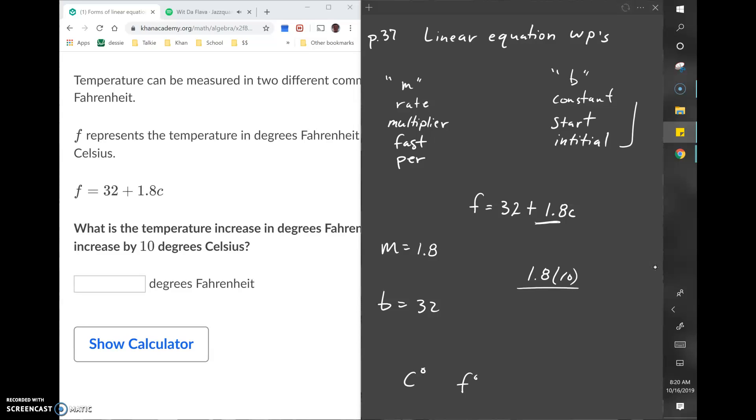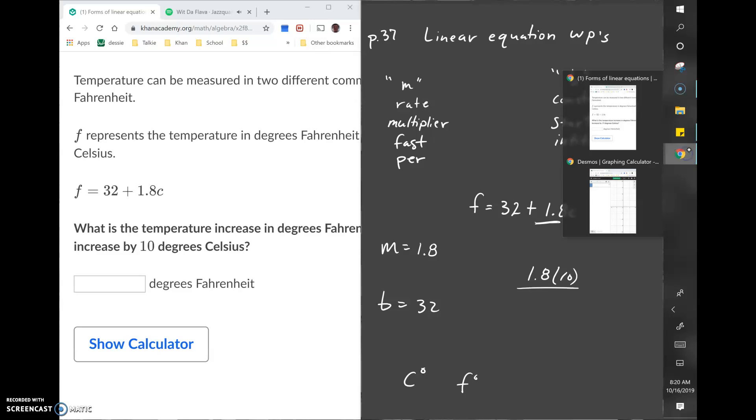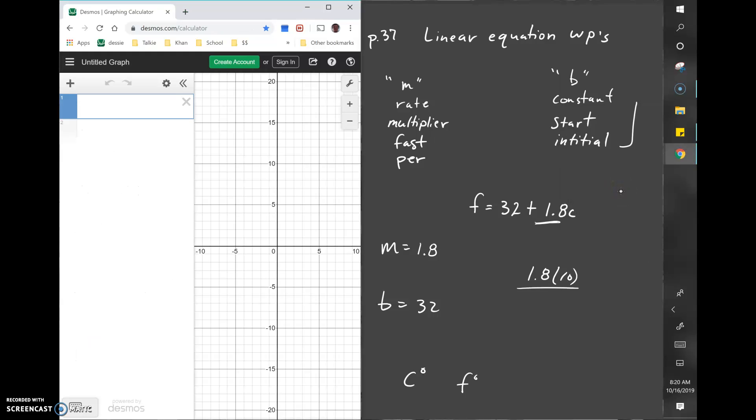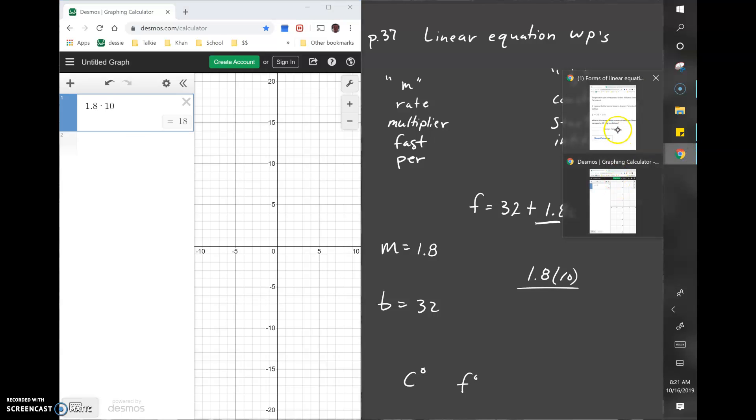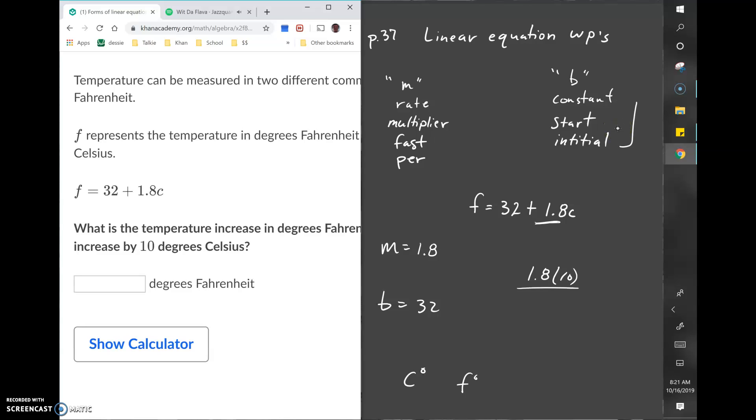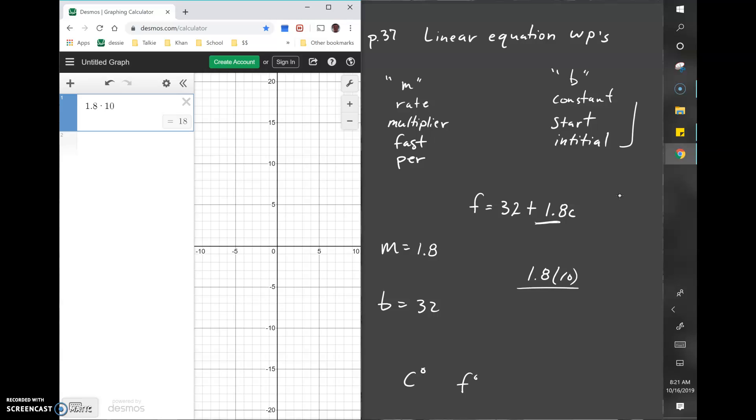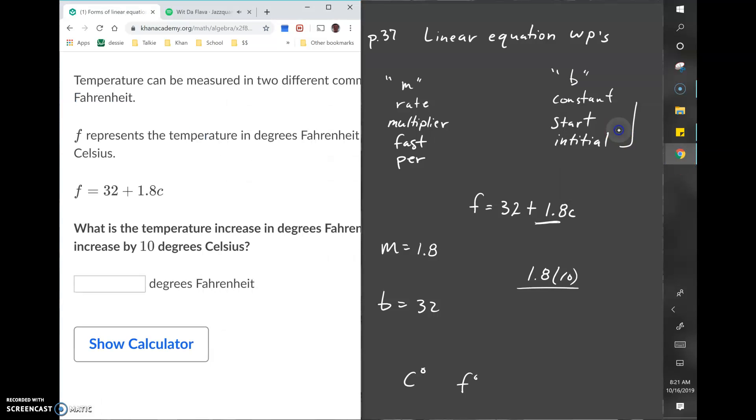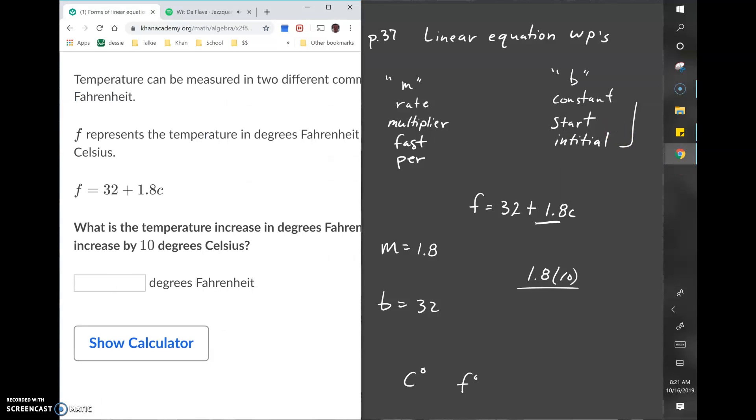1.8 times 10 is 18. When Celsius increases by 10 degrees, Fahrenheit increases by 18 degrees. So it's really just asking to multiply or scale the rate by 10.